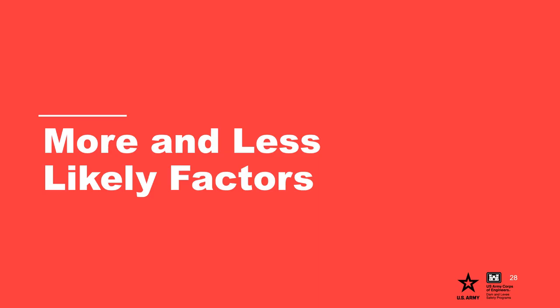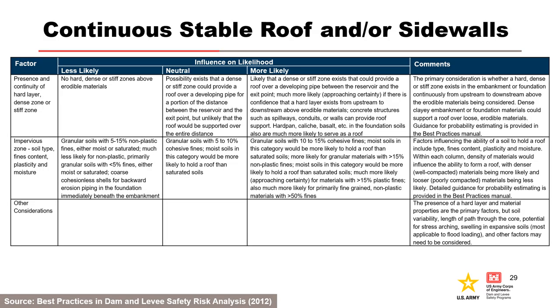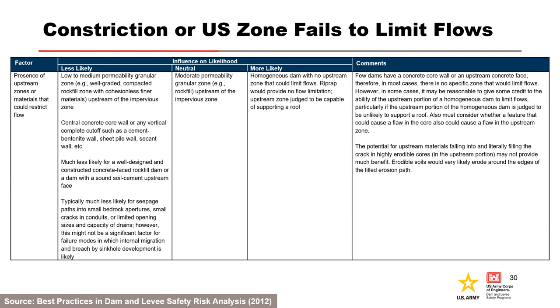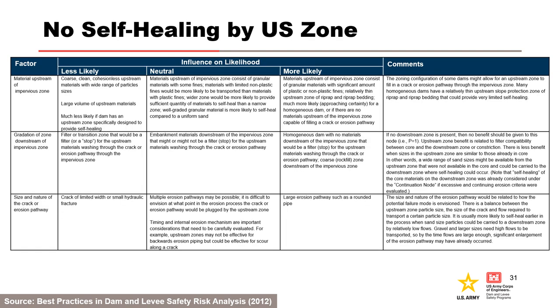The following table from the best practices manual can be used to help assess the likelihood of progression of internal erosion. It can be used as a starting point, but the risk team must develop project-specific more likely and less likely factors to guide subjective probability estimation. The factors in one portion of the table address a continuous stable roof and sidewalls, another portion addresses upstream flow limitation, and a third portion addresses self-healing by an upstream zone.